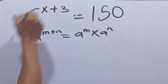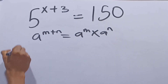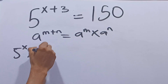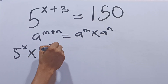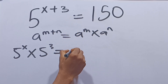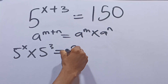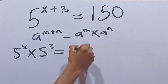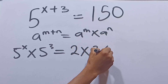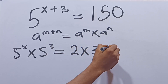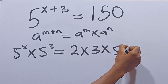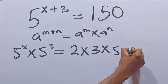So here we have 5 raised to the power x times 5 raised to the power 3, which is equal to 150. We can write 150 as 2 times 3 times 5 times 5.